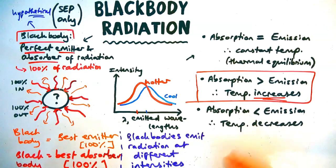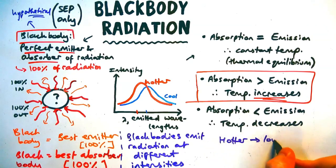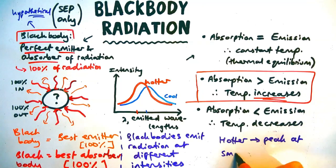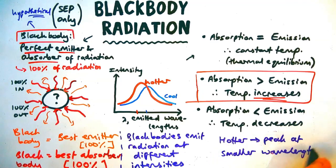Now black bodies emit radiation at different intensities or at different wavelengths. So what that means is some is high, some are low. Now you might notice from the graph here that actually the hotter curve, the red one here, has a peak at a lower or smaller wavelength.